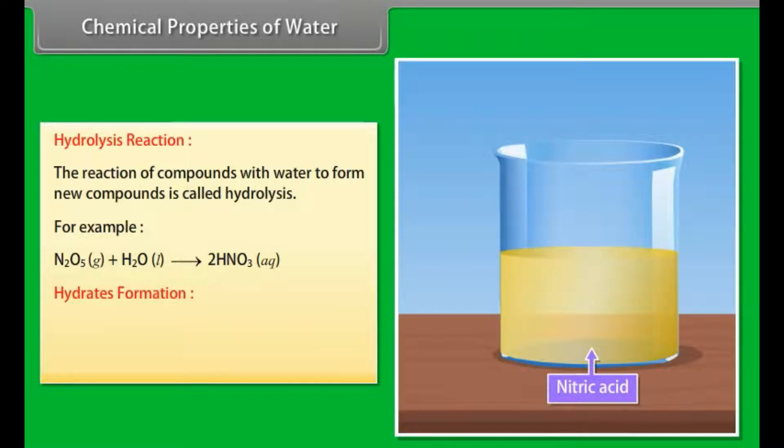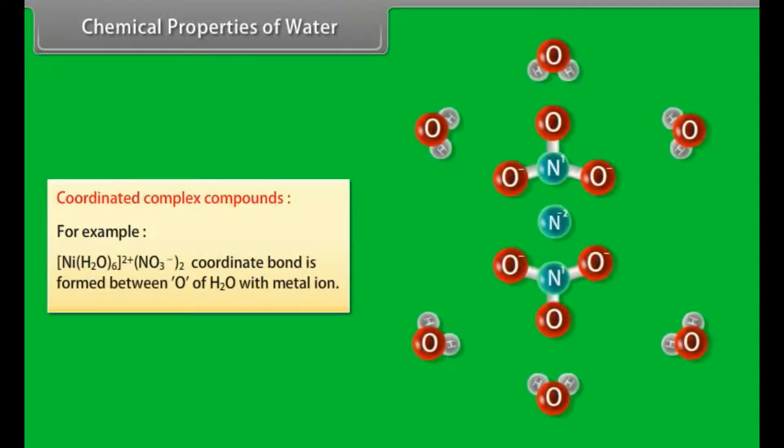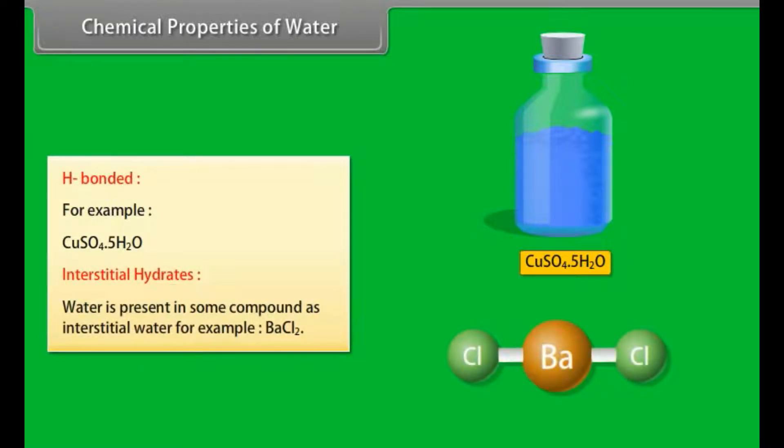Hydrates formation: Water forms hydrates with metal salts. There are three main types. Coordinated complex compounds, for example nickel-2-nitrate hexahydrate. Coordinated bond is formed between oxygen of H2O with metal ion. H-bonded, for example copper sulfate pentahydrate. Interstitial hydrates: Water is present in some compounds as interstitial water, for example BaCl2.